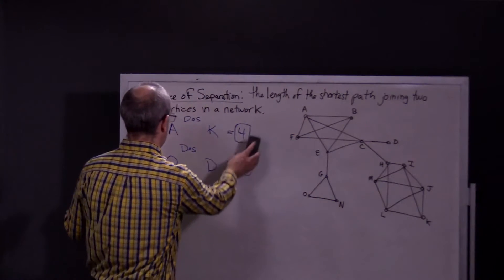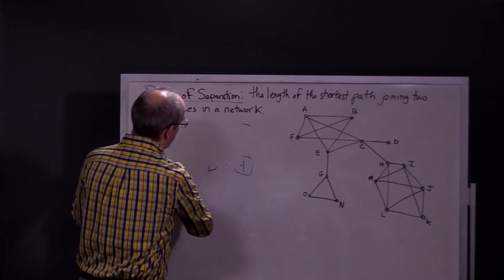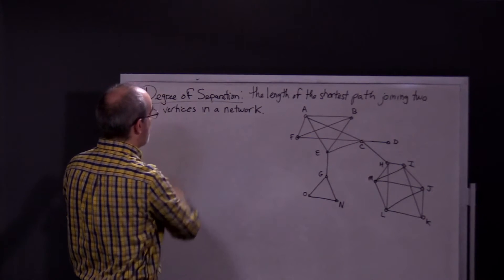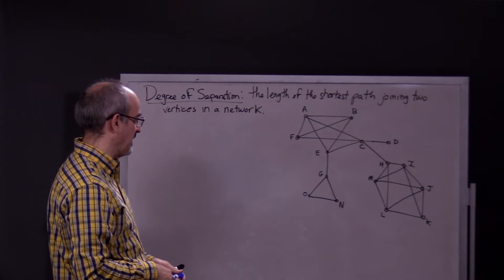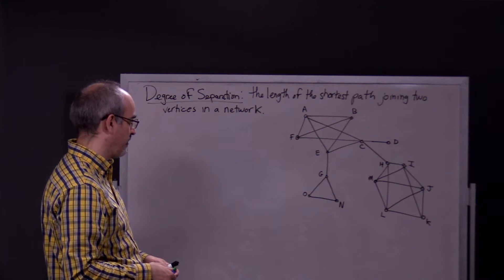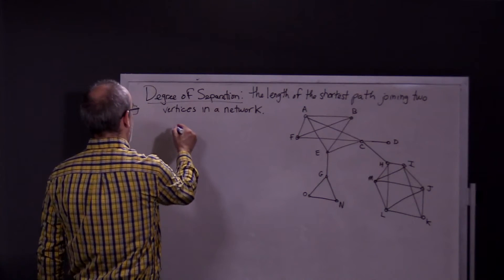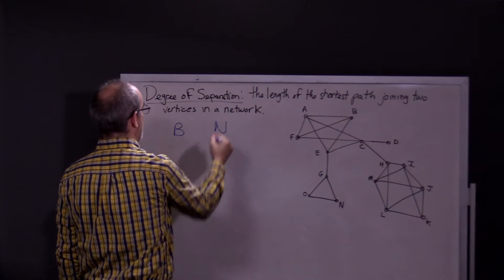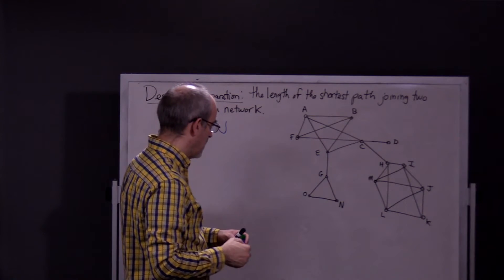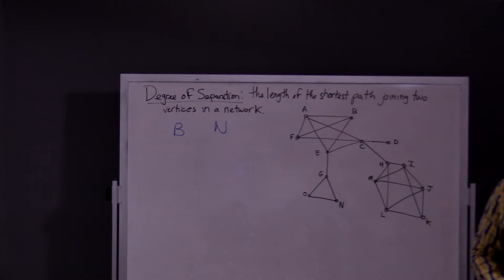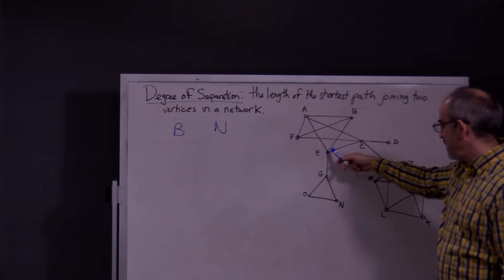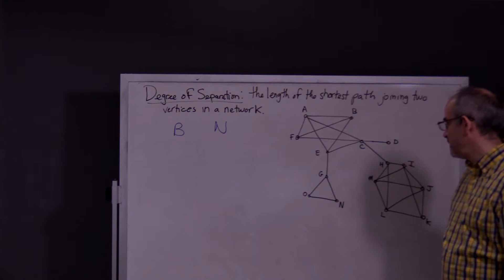Let's just randomly pick. I keep using the word random. It's not really random, but it sort of is. How about just B and N? I know that's kind of obvious. Well, we'll do two more. I will do B and N. What is the degree of separation between B and N? Well, once again, to get to N from B, you'd eventually have to go through E.